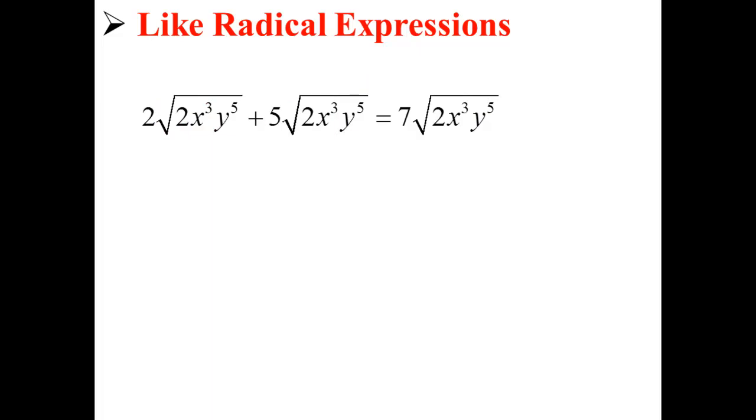It doesn't matter how complicated the expression is. As long as they have the same radicand and the same index, they can be added. Like here, we have 2 times √(2x³y⁵) + 5 times √(2x³y⁵). Well, that's equal to 7 times √(2x³y⁵), because they are like radical expressions and can be added.